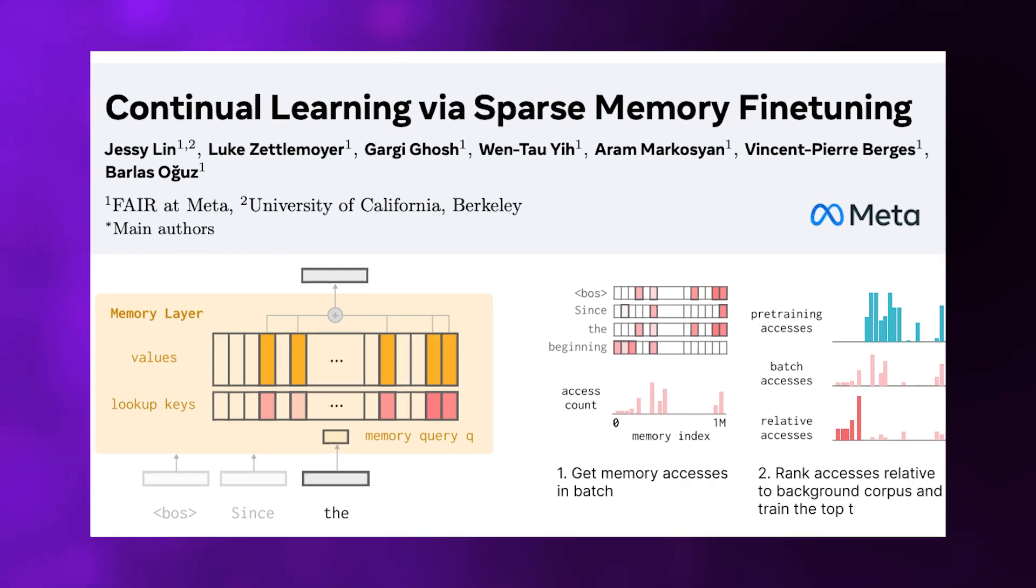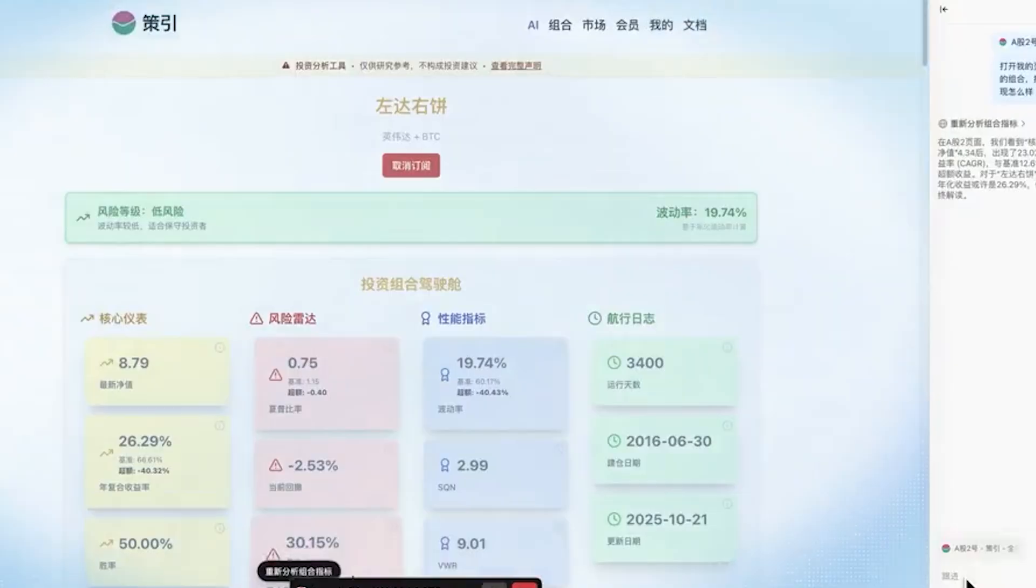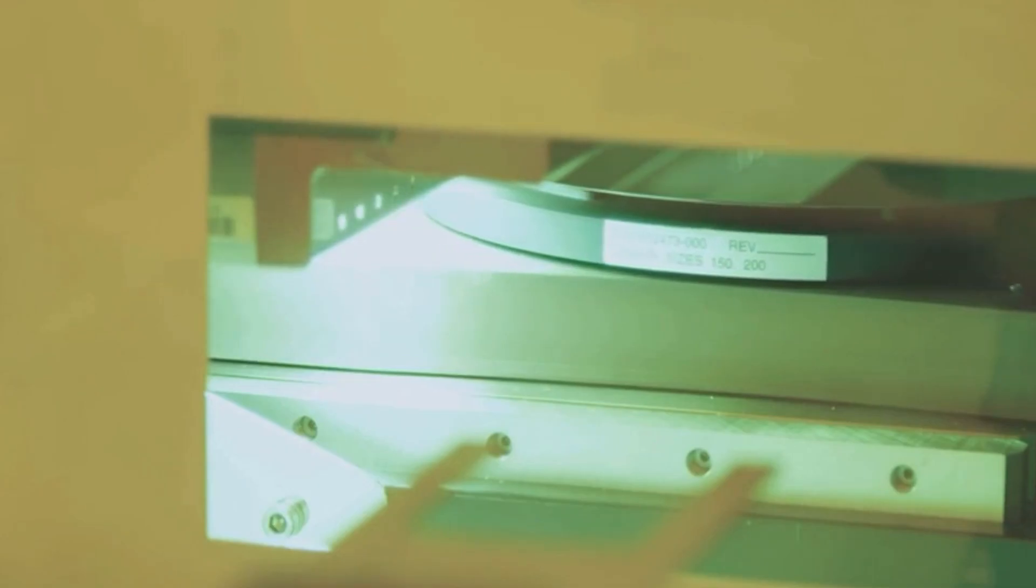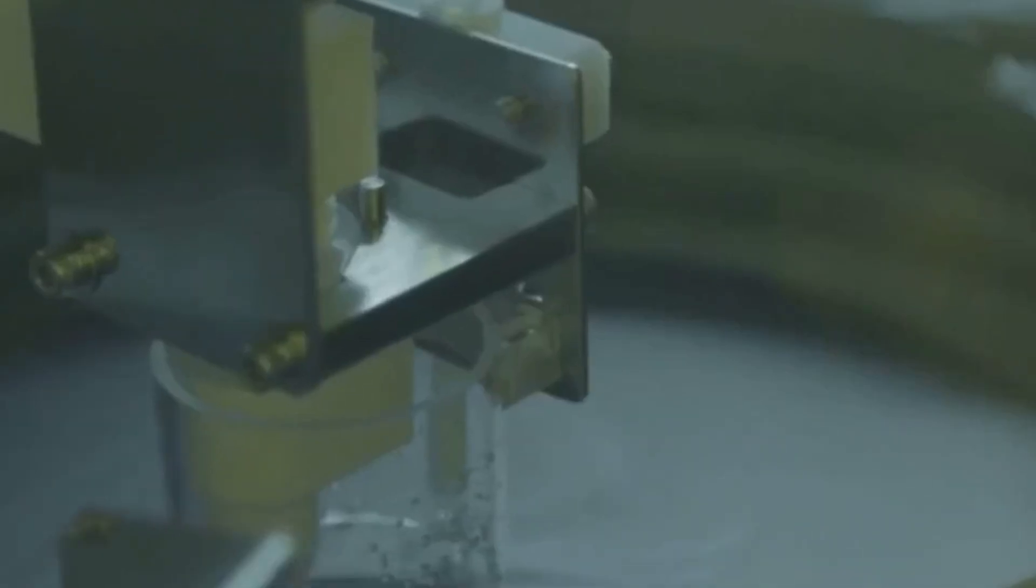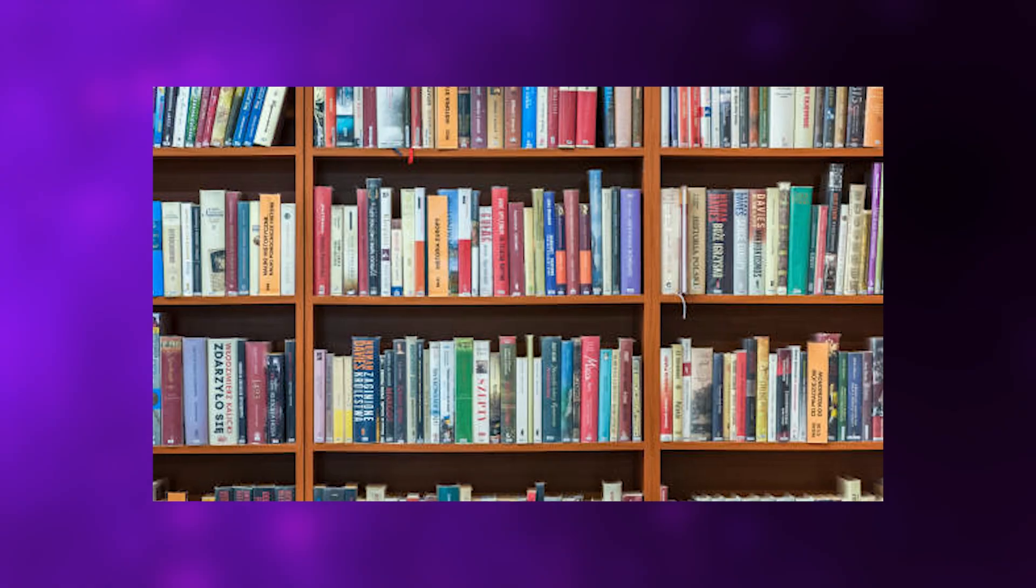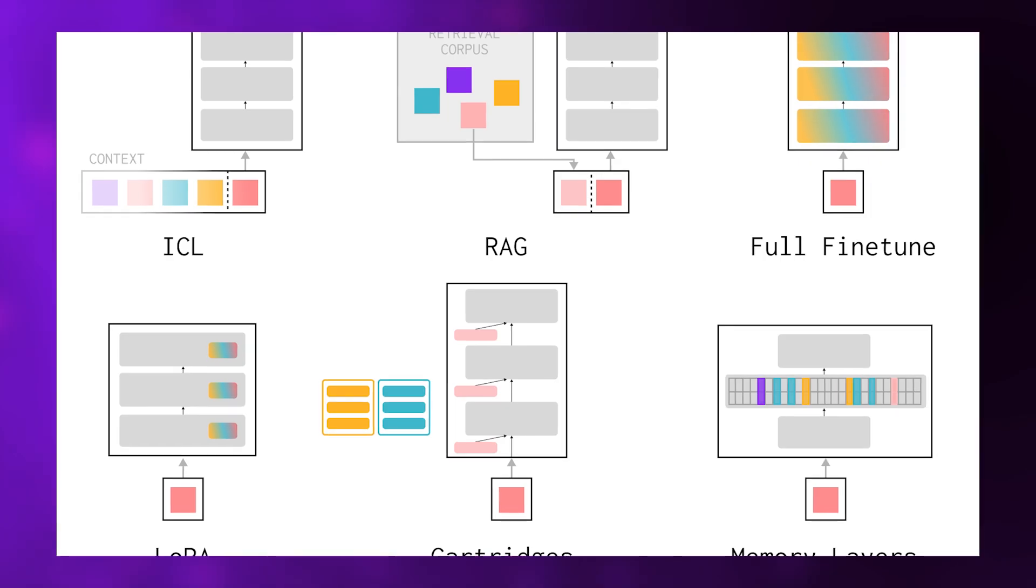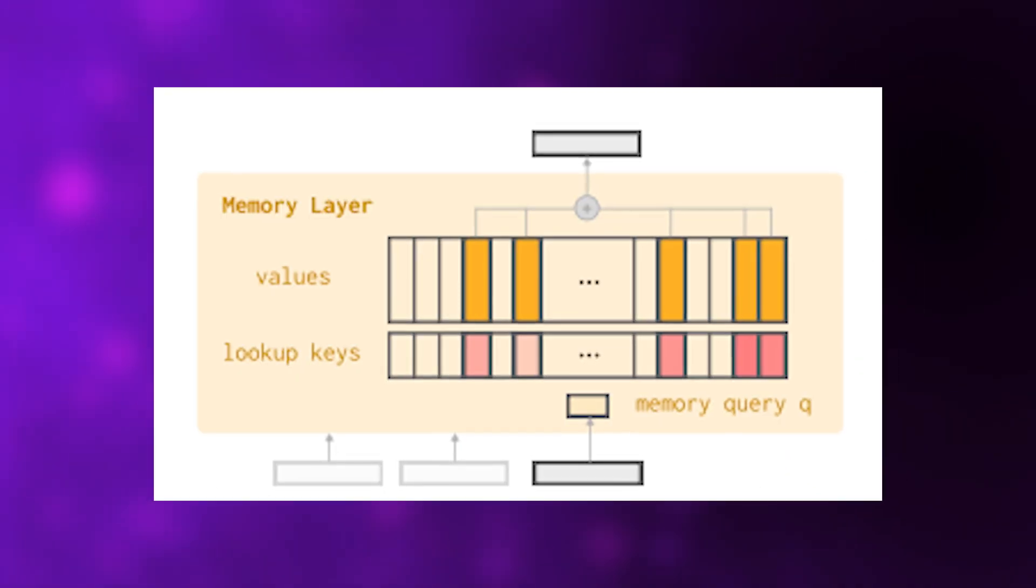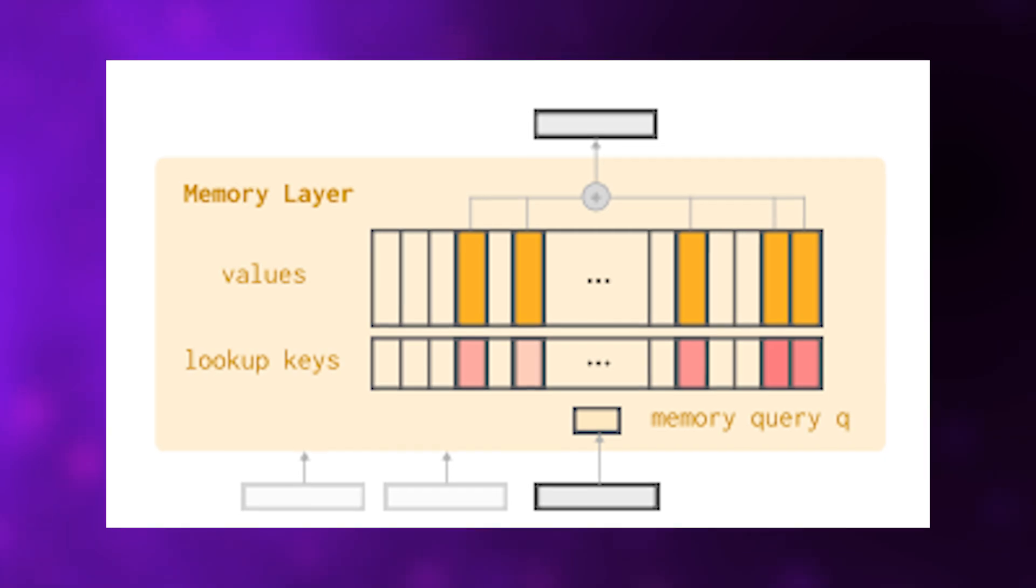Instead of repainting the entire canvas every time new information needs to be added, this method identifies specific, small sections that are most relevant to the new knowledge and updates only those areas. Imagine having a vast library where you can add new books to specific shelves without disturbing the rest of the collection. The system maintains millions of memory slots, but only activates and updates the tiny fraction that are most relevant to each new piece of information.